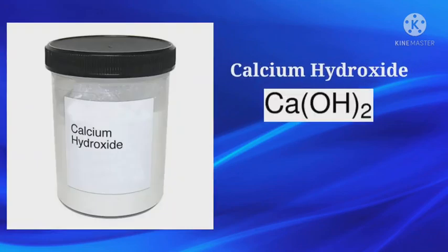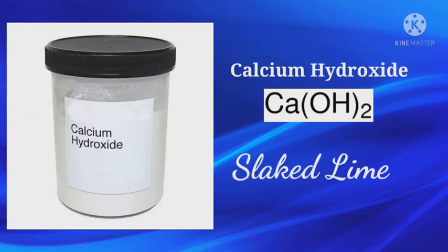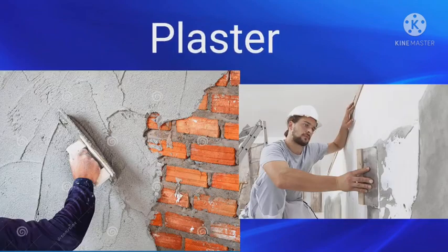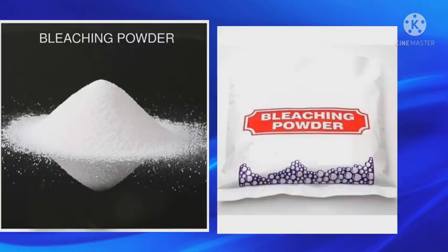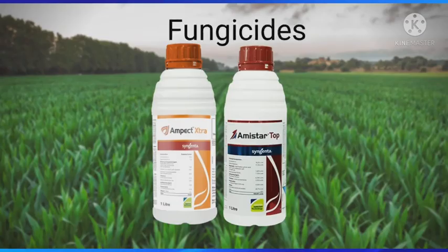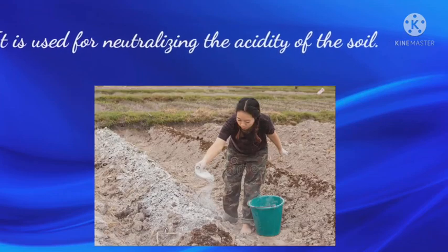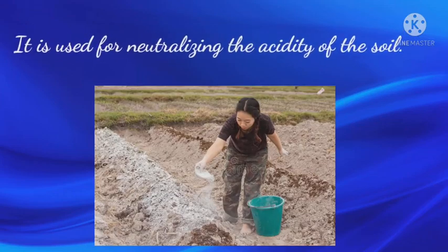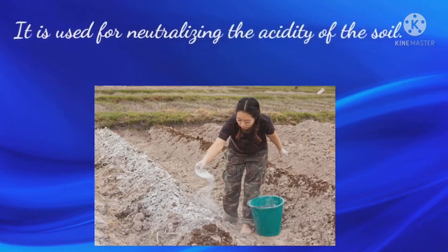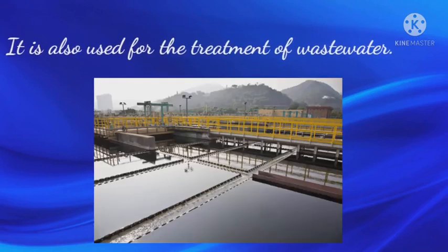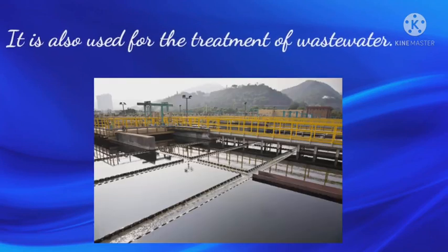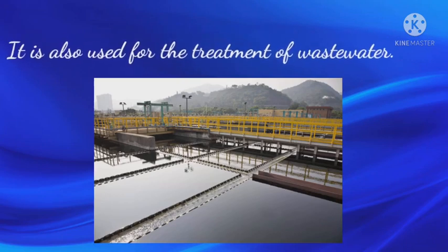Calcium hydroxide. It is commonly called slaked lime. It is used for the preparation of plasters, bleaching powder, sprays, and fungicides. It is used for neutralizing the acidity of the soil. It is also used for the treatment of wastewater.